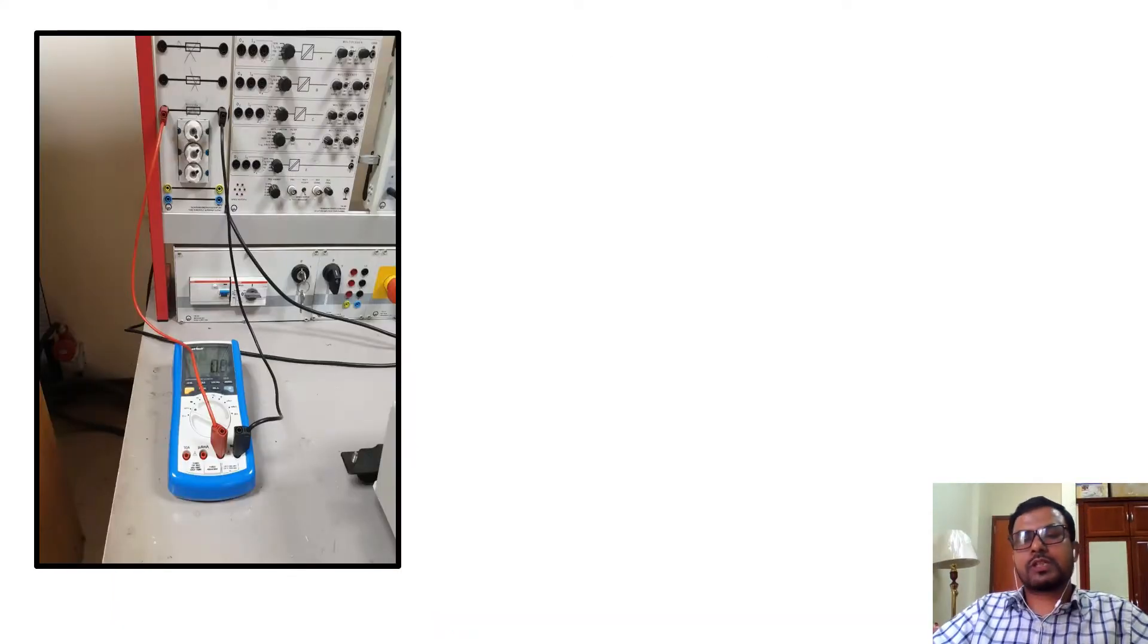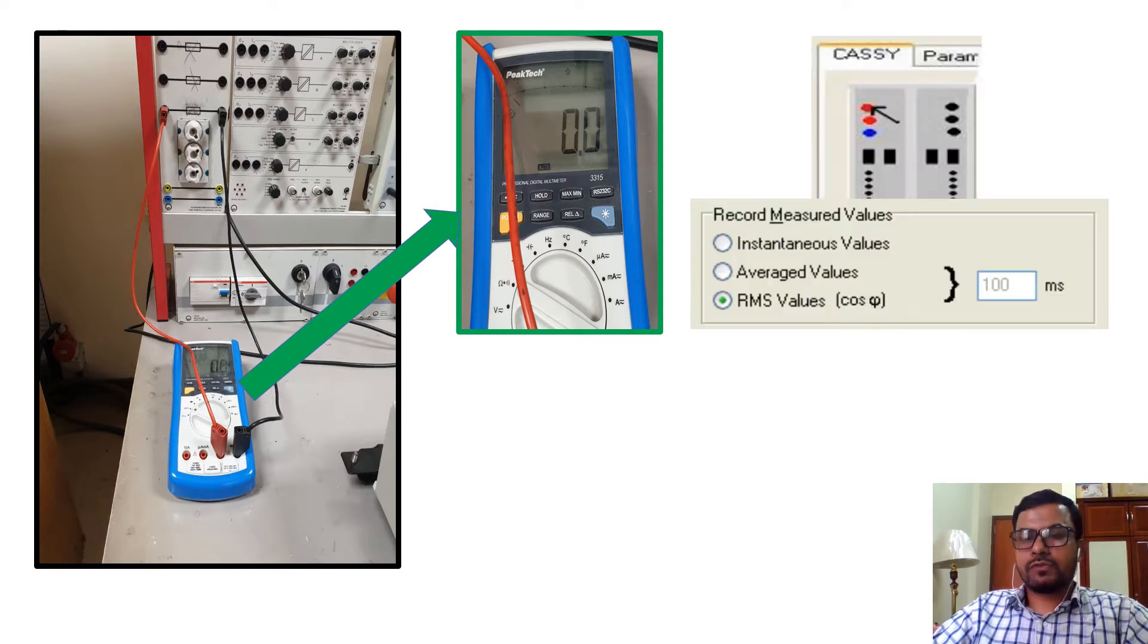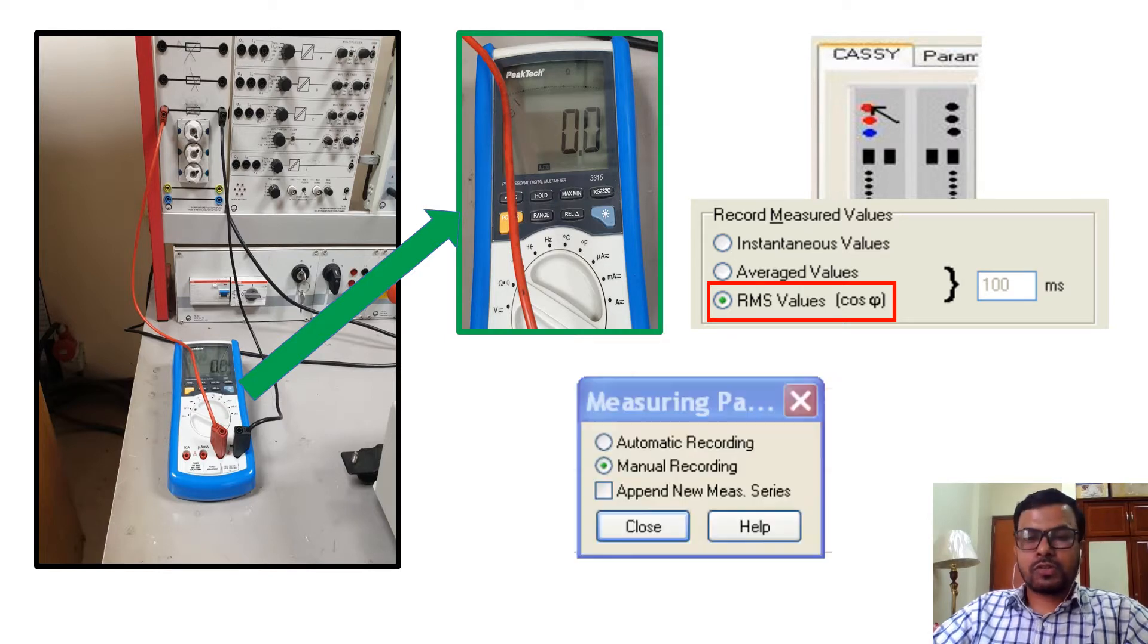Like previous experiments, before making the connection, we have to check the safety fuses, whether they are working or not. While doing the case settings, we must have to select the RMS values, as we are dealing with AC quantities in this experimentation. Also, we will be selecting manual recording as per the guideline.